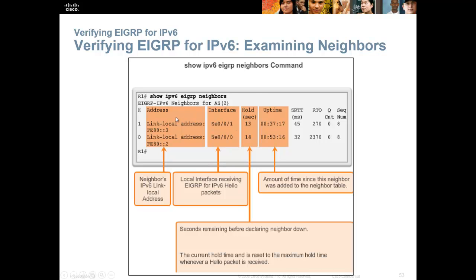So to bring you back up, remember, show IPv6 EIGRP neighbors shows you the addresses you're connected to on their end, your interface, and then the hold time. The hold time starts at 15, and if it gets down to 0 it marks the route as down. Every time it receives a new hello packet, it goes right back up to 15 and starts all over again. And up time is how long you've known about the route.